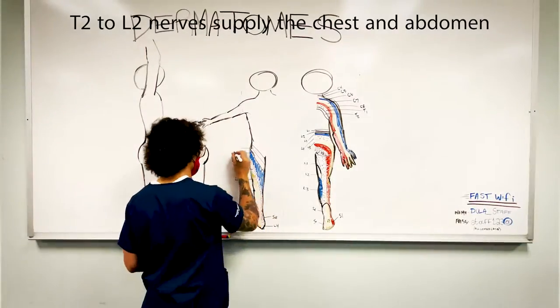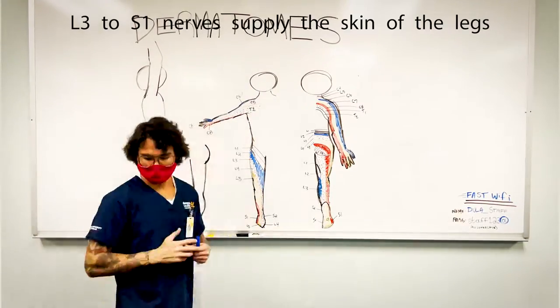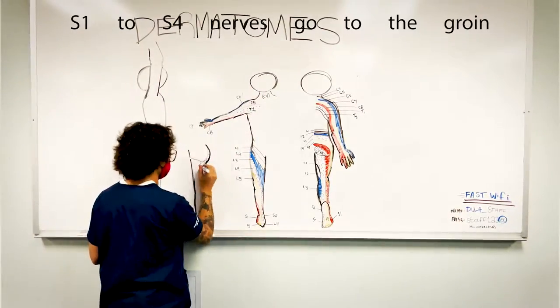T2 to L2 nerves supply the chest and abdomen. L3 to S1 nerves supply the skin of the legs. S1 to S4 nerves go to the groin.